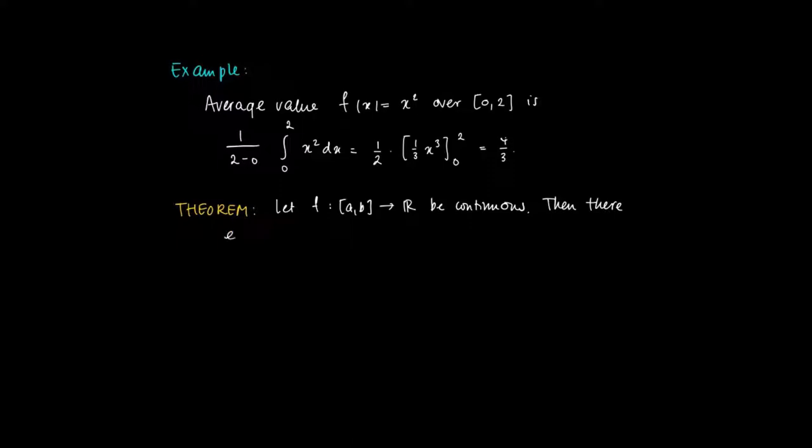Then there is a number c in the interval [a, b] such that the function value at c equals the average value of f over the interval [a, b]. So f(c) = 1/(b-a) times the integral from a to b of f(x) dx.